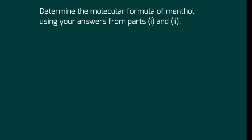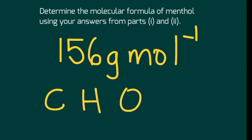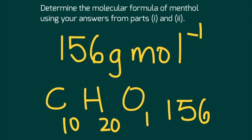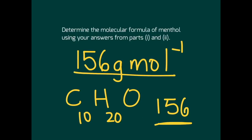We know that menthol has a molar mass of 156 g/mol, and the ratio of C:H:O is 10:20:1. Using the molar masses — carbon ≈ 12, hydrogen ≈ 1, oxygen ≈ 16 — the empirical formula C₁₀H₂₀O gives a molar mass of 156 g/mol. Since the calculated molar mass equals the given molar mass, the empirical formula is the same as the molecular formula. Therefore, the molecular formula for menthol is C₁₀H₂₀O.